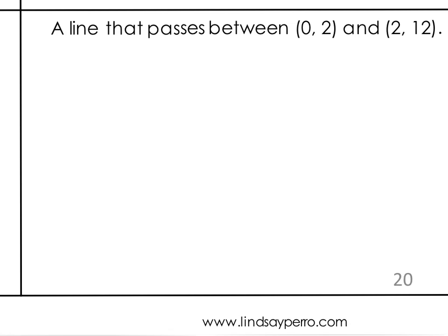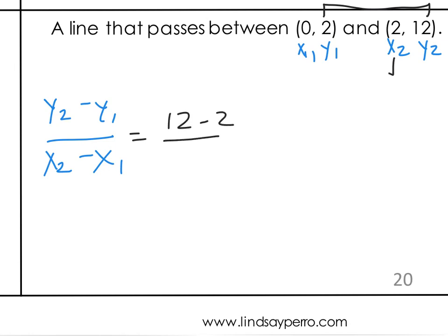A line that passes through zero, two, and two, twelve. Again, I'm going to label x1, y1, and x2, y2. So I'm still going to do change in Y over change in X, or y2 minus y1 over x2 minus x1. So y2 is 12 minus 2, and x2 is 2 minus 0. So 12 minus 2 is 10, 2 minus 0 is 2. 10 over 2 is our answer, but that's not simplified, so take it one more step, and 10 over 2 simplifies to 5.